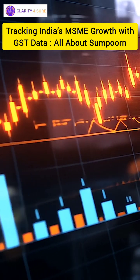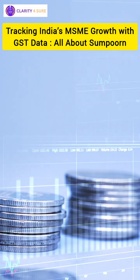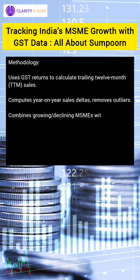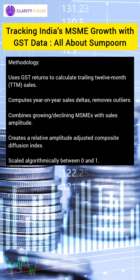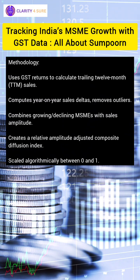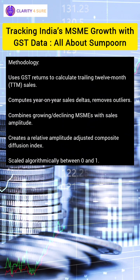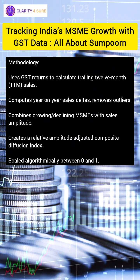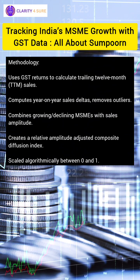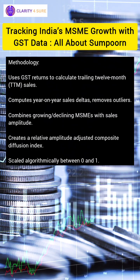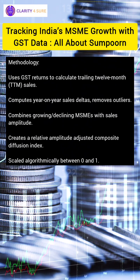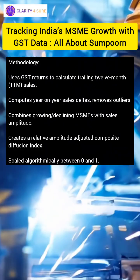Here's how it works. First, MSME sales data for the current and previous months is captured through GST returns. Then, year-on-year changes are calculated while filtering out anomalies and outliers. Growing and declining MSMEs are analyzed, considering both the direction and the amplitude of their sales changes. Finally, an algorithm computes the relative amplitude-adjusted diffusion index, scaling the value between 0 and 1. The result is a timely, accurate, and data-backed reflection of MSME sales activity.